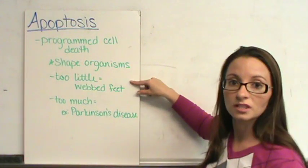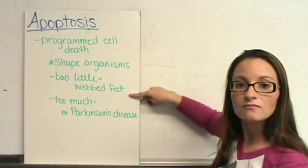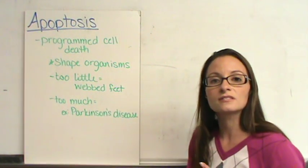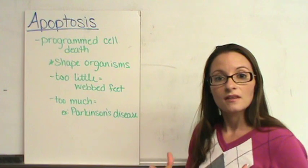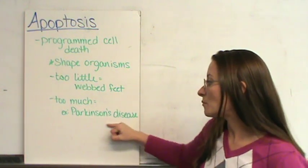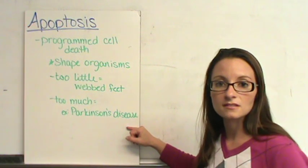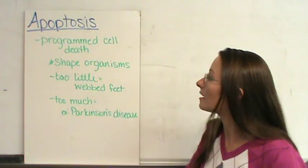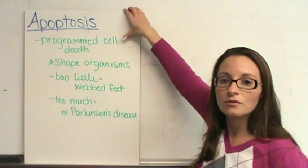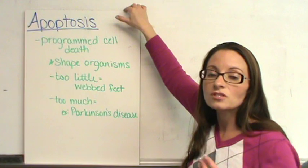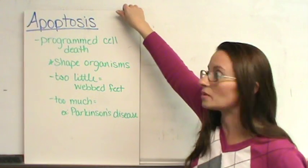If you have too little, for example, you're going to have webbed feet like I just said. If you have too much, however, a lot of times you end up with certain diseases depending on where the programmed cell death happens. An example of that would be Parkinson's disease, which affects the nervous system and things like that. So programmed cell death is something that needs to happen within our cells, but too much or too little can be an issue.